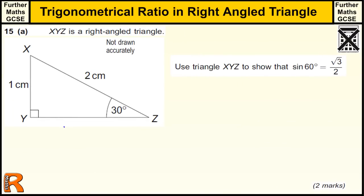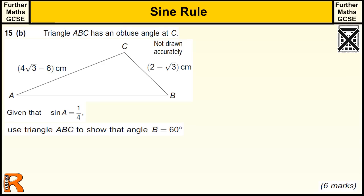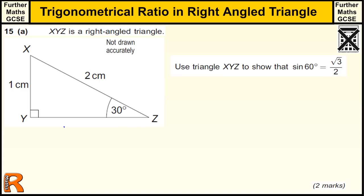Trigonometry in a right-angled triangle. This is a further maths GCSE question in two parts: part A, worth two marks, and part B, worth six marks, so much more complicated. The key thing here is no calculator is allowed, so it's not just straightforward to put the numbers into a calculator.